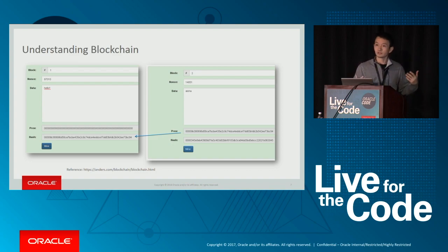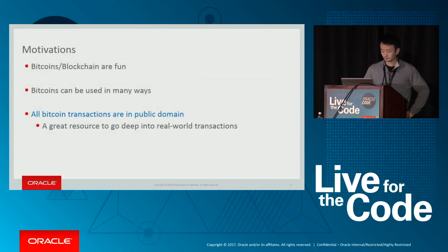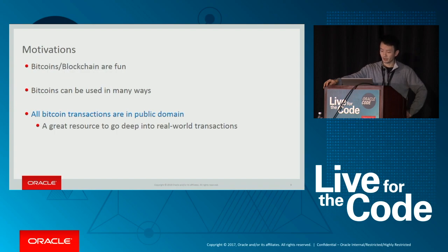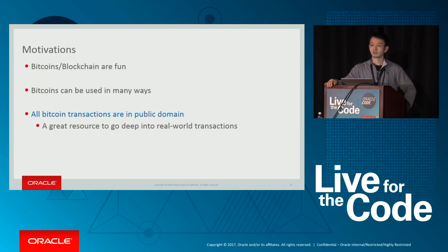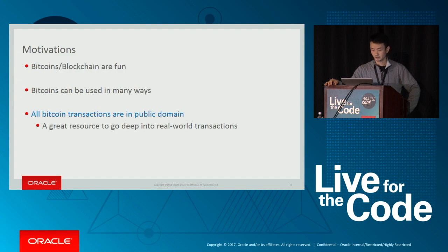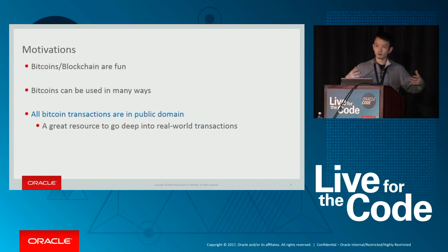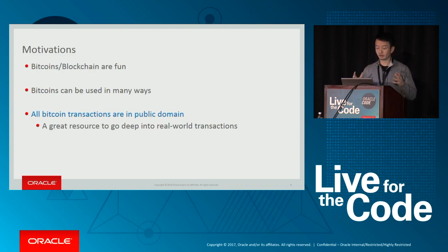The blockchain is immutable — you can only append. Once a block is appended, you cannot really undo it. We're interested in Bitcoin and blockchain because it's really fun, there are a lot of uses, and most importantly, all Bitcoin transaction data are in the public domain. Unlike banks that give you fake or synthetic data, all Bitcoin transactions are available — every single transaction from 2009. I pulled all of this; it took about 100 gigabytes of disk space. It's a really valuable dataset for analyzing real-world transaction data.